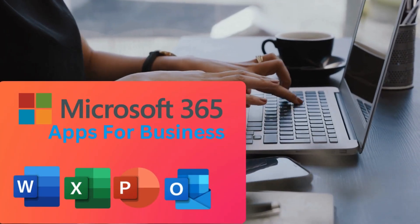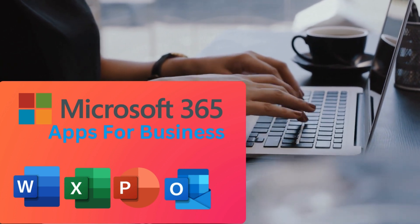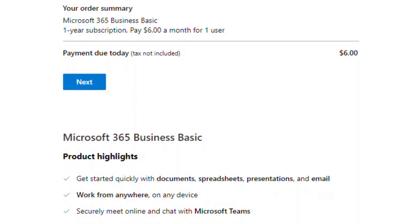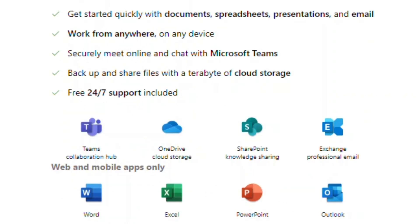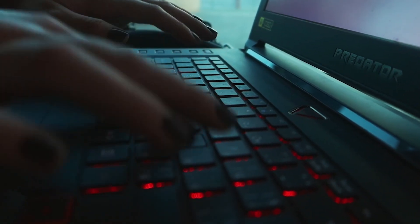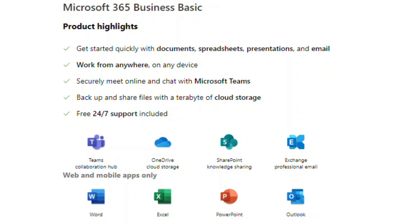Next on the list, we've got Microsoft 365 Business Basic, which is ideal for users needing online collaboration tools such as Teams, SharePoint, and Exchange Online. This is priced at $6 per user per month or $72 per user per year. This is suitable for businesses that don't really need the desktop versions of applications on their computers, but still require the basic online productivity and collaboration tools. They can still have access to the web versions of Office applications such as Word, Excel, and PowerPoint.